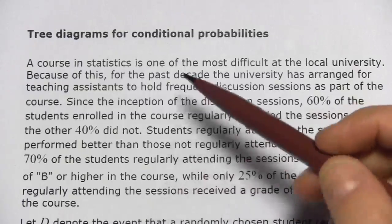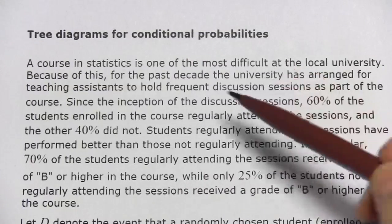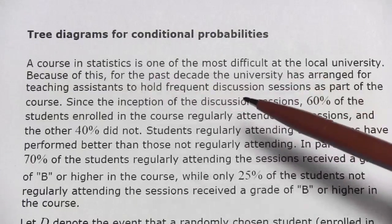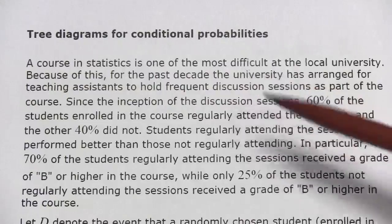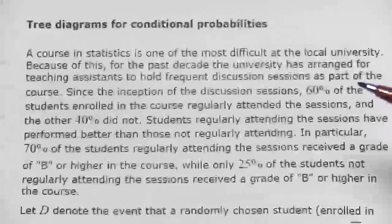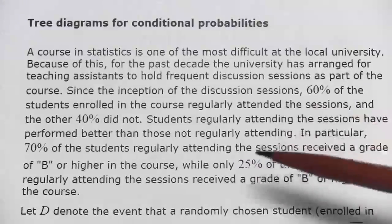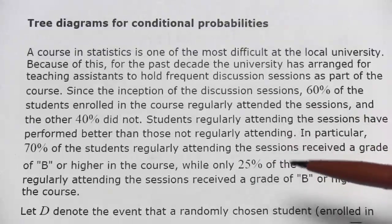Here we have a problem about conditional probability that involves a tree diagram. There's a big amount of text here — that's the problem — and then there's a diagram that goes along with it.